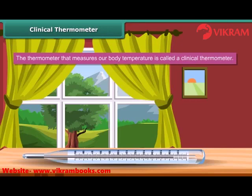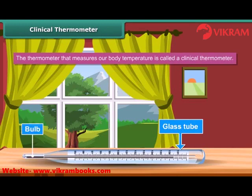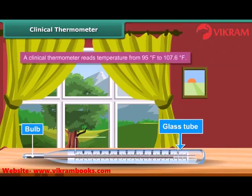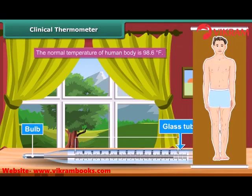A clinical thermometer consists of a long narrow uniform glass tube. It has a bulb at one end filled with mercury. Outside the bulb, a small shining thread of mercury can be seen. A clinical thermometer reads temperature from 95 degrees Fahrenheit to 107.6 degrees Fahrenheit. The normal temperature of the human body is 98.6 degrees Fahrenheit. The clinical thermometer is also known as a doctor's thermometer.